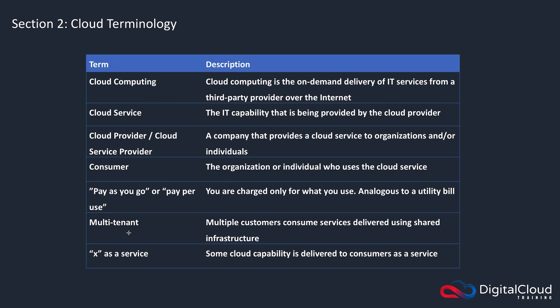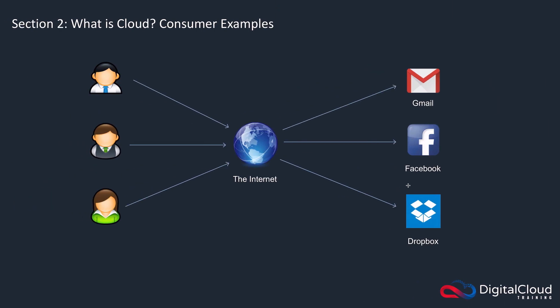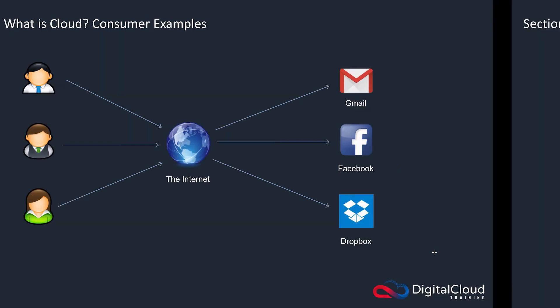Multi-tenancy is very common in cloud and this means that you're sharing the service with multiple customers. Facebook, Gmail, and Dropbox each have millions of customers. Your files on Dropbox are not on a dedicated device just for you — they're on systems shared amongst many different customers. That's multi-tenancy.